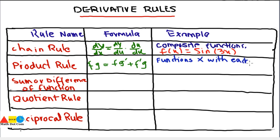Keep in mind there is a difference between the product rule and the chain rule. Don't confuse them — the chain rule is for composite functions and the product rule is for functions that are multiplying with each other. For example, f(x) equals sin(x) times cos(x). This function has two functions multiplying with each other — sin(x) and cos(x) — they are not composite functions. This is how they differ from each other.